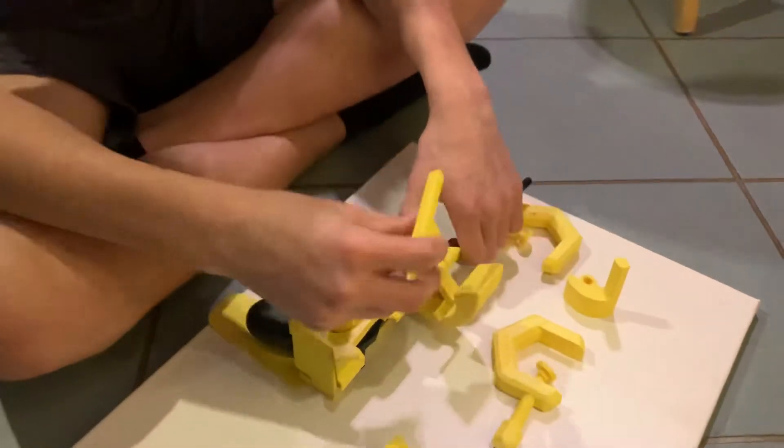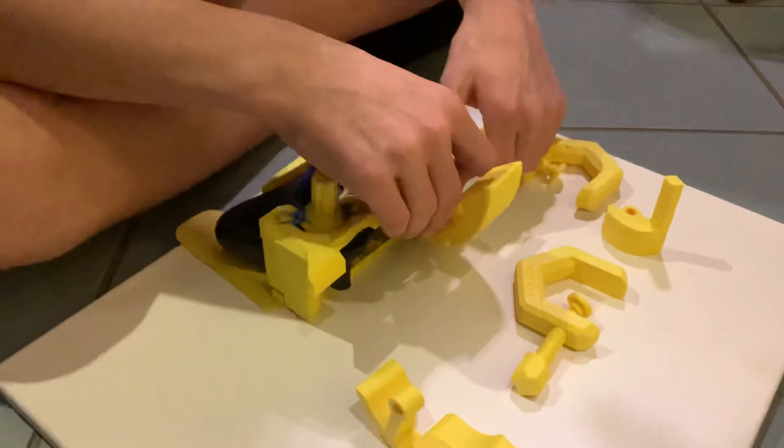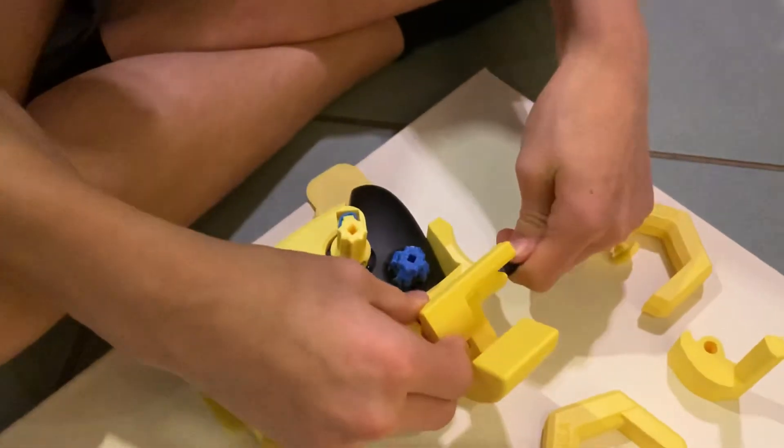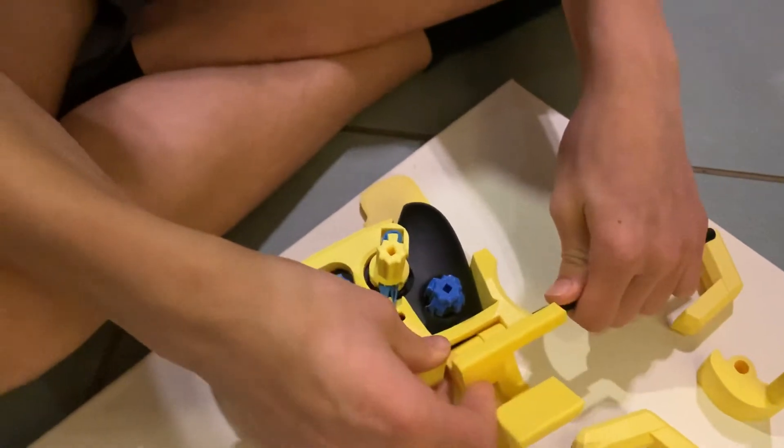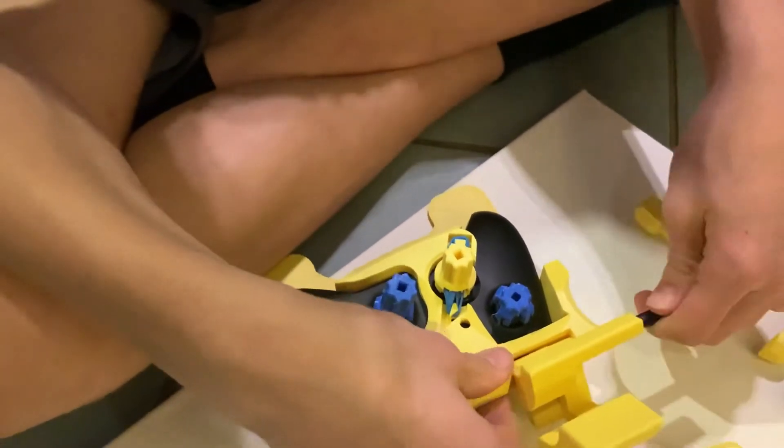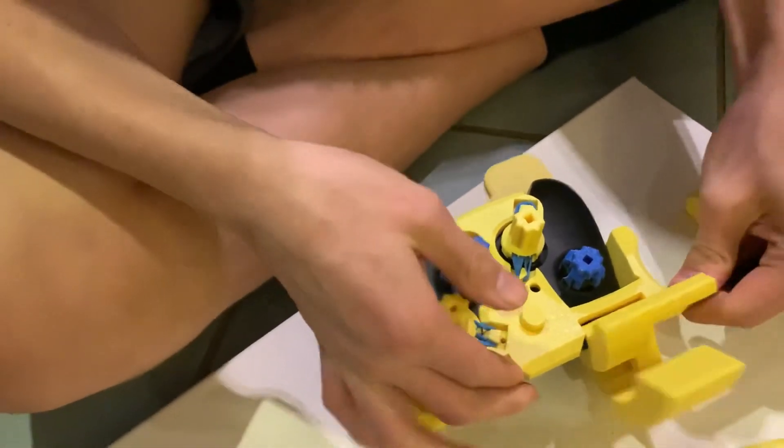Then, the smaller one. That is the inner trigger. Like this. Then, the smaller one. Just got this stuck. Good.